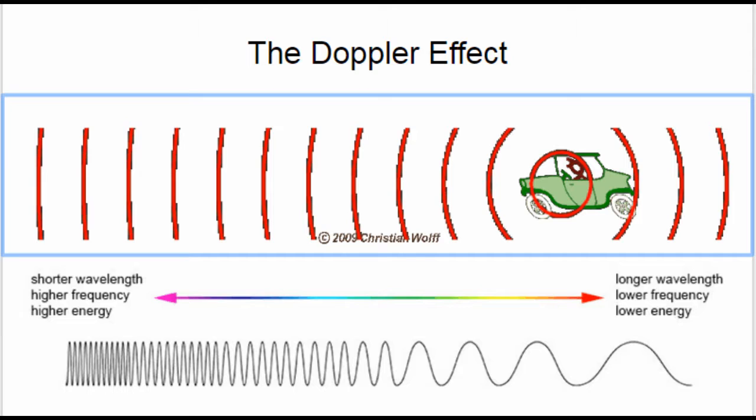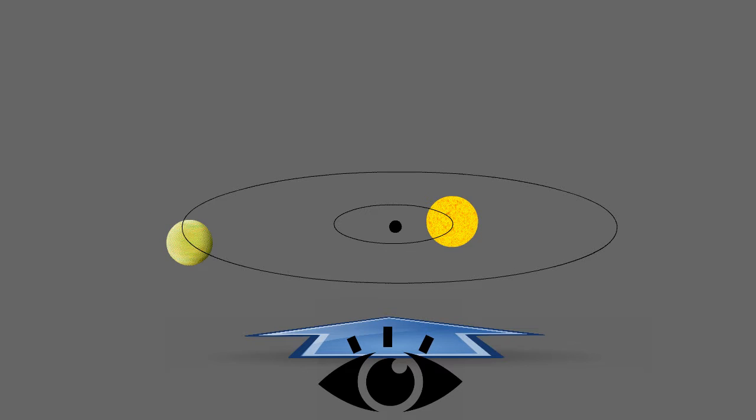Planets don't simply orbit around the center of the apparent star. Instead, both the planet and the star orbit the barycenter or the center of mass between the two objects. We can see the black dot in this picture. At that place, the gravitational force from the star and the planet are equally balanced.